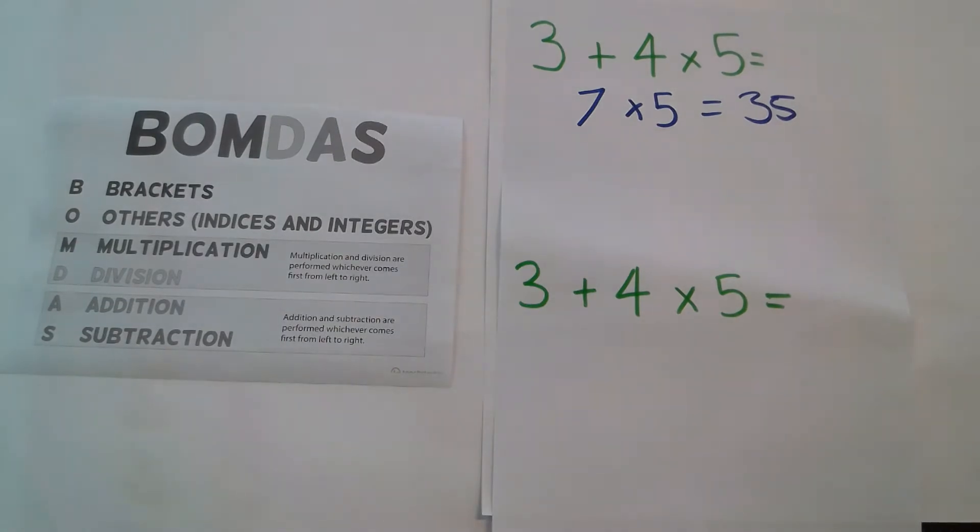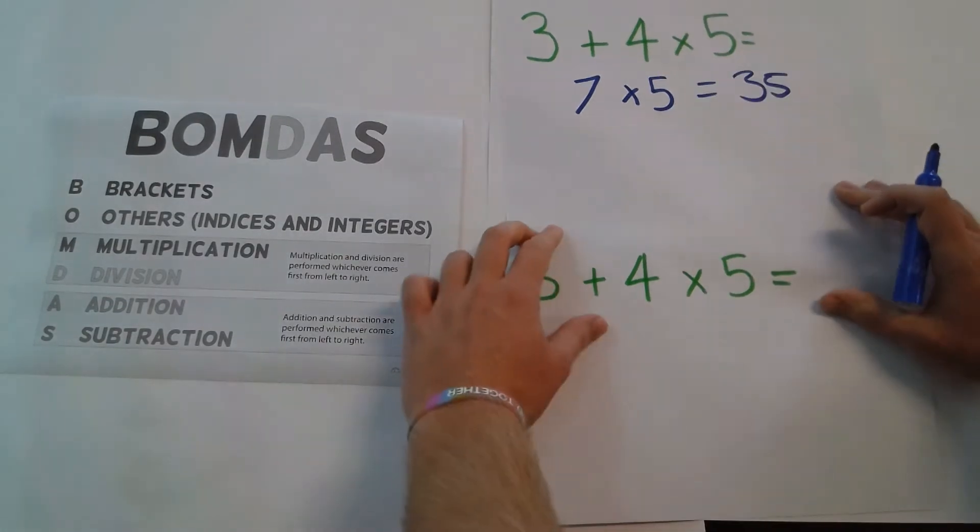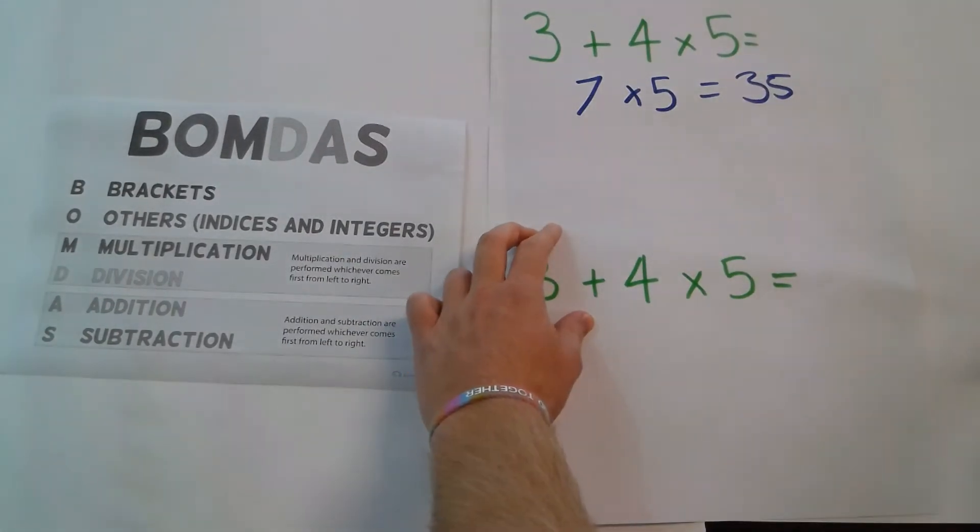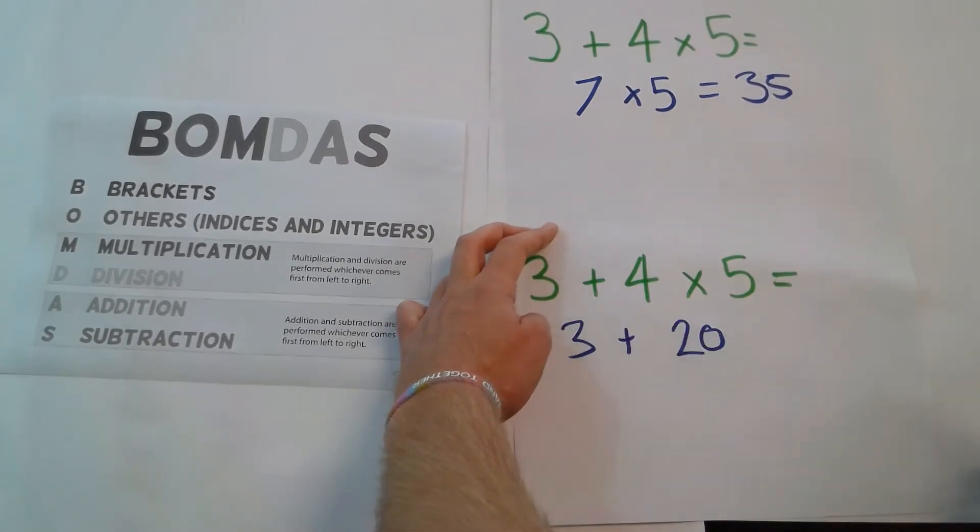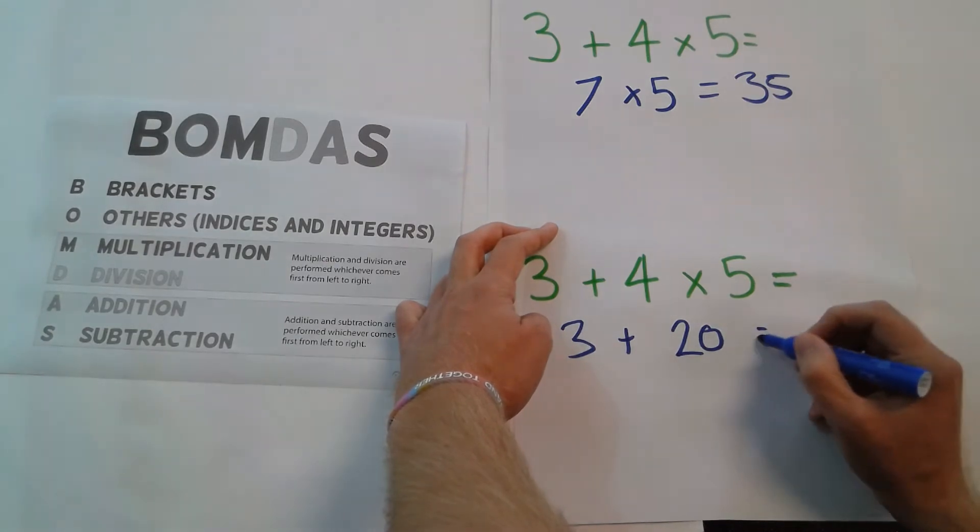Now you can solve it that way, or you can start with multiplication first, which is 4 times 5, which equals 20. Then we can add the 3. So 3 plus 20 equals 23.